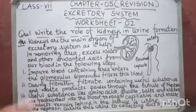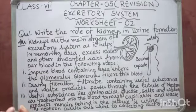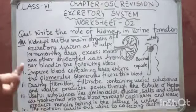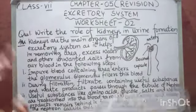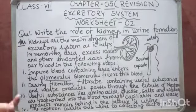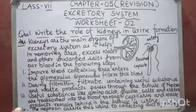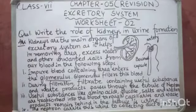Now, there are other excretory organs in our body. Other excretory organs are lungs. Lungs remove CO2, which is carbon dioxide. Carbon dioxide is a waste product from our body. Second is sweat glands. Sweat glands help in removing sweat from our body.